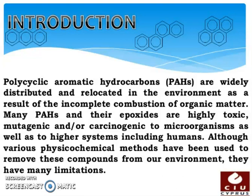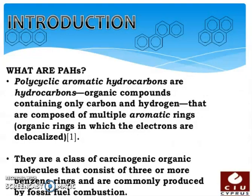Although various physicochemical methods have been used to remove these compounds from our environment, they have many limitations. Polycyclic aromatic hydrocarbons are organic compounds containing only carbon and hydrogen, composed of multiple aromatic rings in which the electrons are delocalized. They are a class of carcinogenic organic molecules that consist of three or more benzene rings and are commonly produced by fossil fuel combustion.